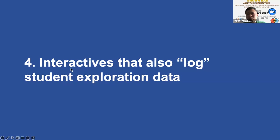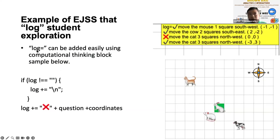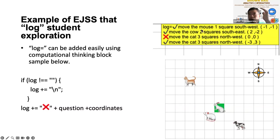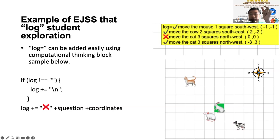Before this full analytics system, people like us were already using a log to store data. If you look at the interactive, there's a log — for example, 'move the mouse one square' and the coordinates. Looking at the computational block of code: if the log is not equal to blank, then add the log onto the next line. This creates the illusion of it moving down — if it is not blank, it records on the next line, otherwise everything appears in one string which is very hard to read. The log variable adds onto itself with a cross or tick, plus the question variable and coordinates. So it is possible to do logging of data, but the current data analytics dashboard is a whole new level.